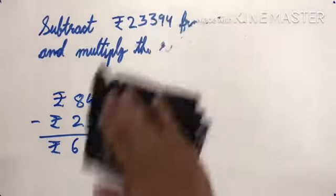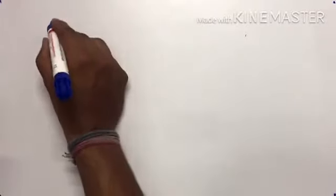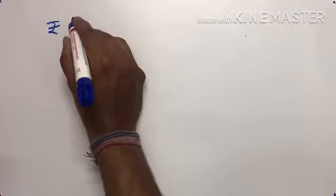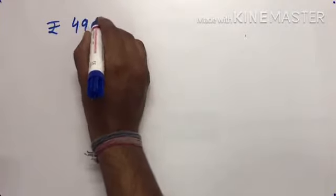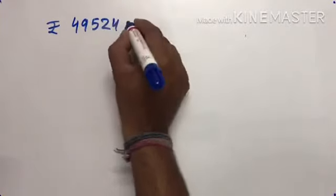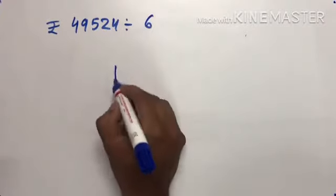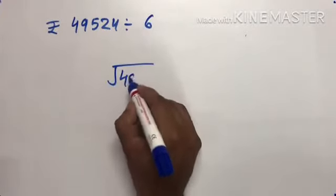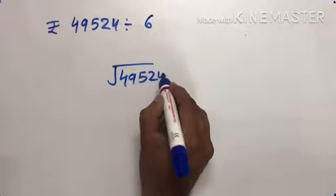Now let us move towards our next topic, that is division of money. So let us solve this: rupees 49,524, we have to divide it by 6.